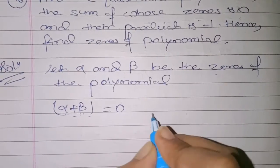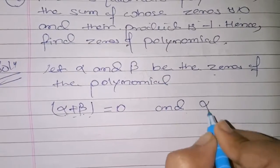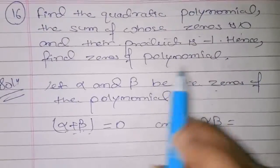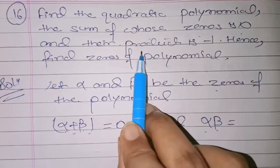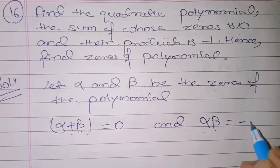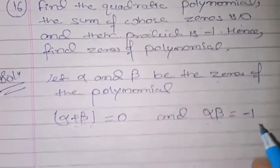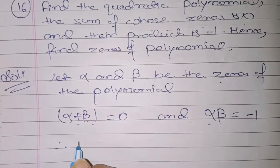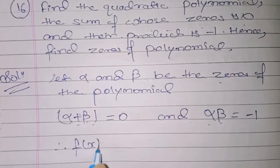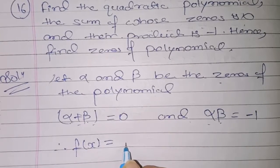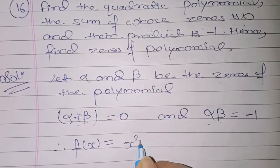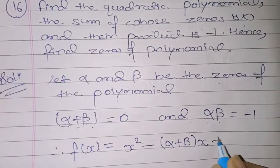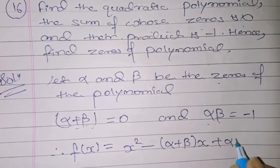Alpha and beta as the product of zeros is minus one — given is minus one. Then we have to know that our required polynomial f(x) is equal to x squared minus (alpha plus beta)x plus alpha into beta.